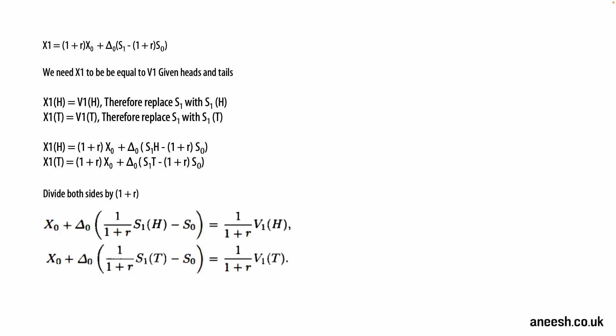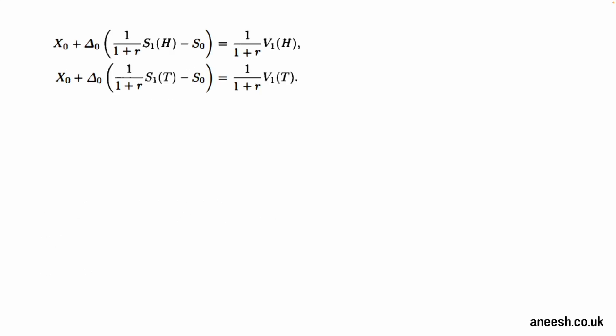If we take our formula for X1 and equate it to V1(H) and V1(T), we can divide both sides by (1+r) for a slightly simplified formula. The X0 is no longer multiplied by (1+r) and S0 is also left alone. What we now have is a representation of our portfolio value for a heads and tails coin flip with respect to X0 and delta zero, the two values we're trying to derive.